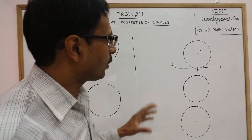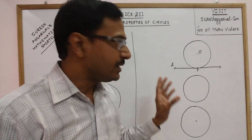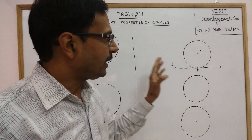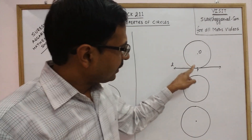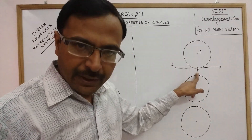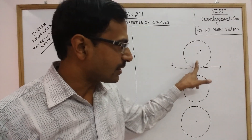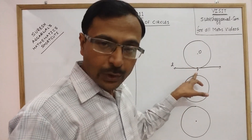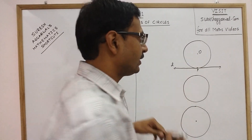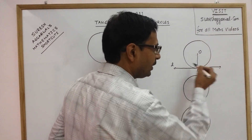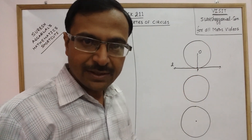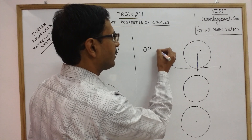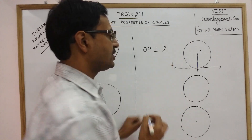Now let us understand some of the properties of these tangents. The first basic property of a tangent is that at the point of contact where the tangent is touching the circle — point P — if you join this point of contact with the centre of the circle, that is OP, this is the radius of the circle. So the radius OP will always be perpendicular to the tangent L.